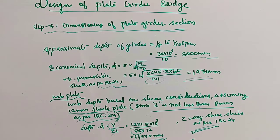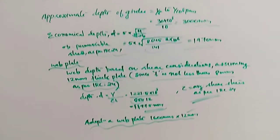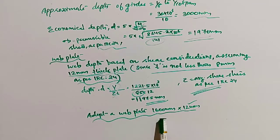Depth 1600 mm and thickness 12 mm. So adopt a web plate 1600 mm by 12 mm.